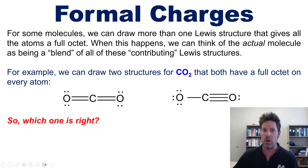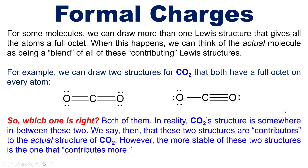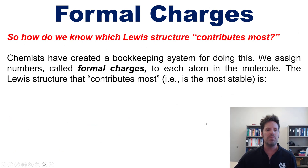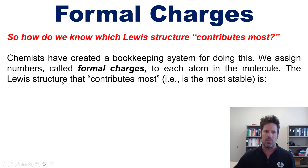You might ask which one of these is right. As it turns out, both of them — in reality, CO₂'s structure is somewhere in between these two. We say that these two structures are contributors to the actual structure of CO₂, which exists in some mystical realm between these two. However, the more stable of these two structures is the one that contributes more. So how do we determine which one is more stable or contributes most? Well, chemists have created a bookkeeping system for doing this.